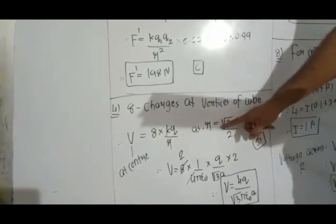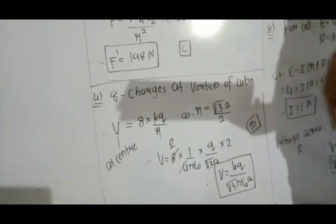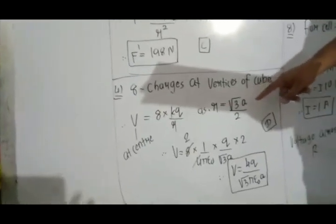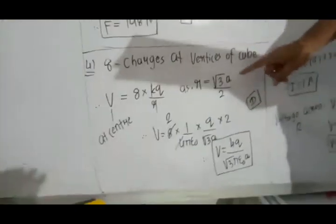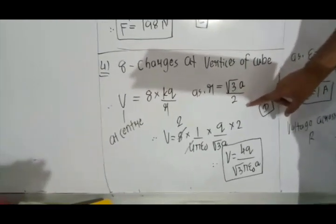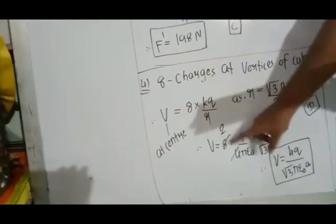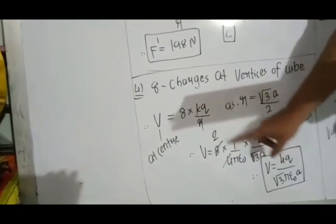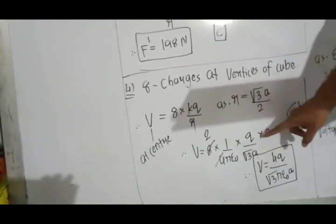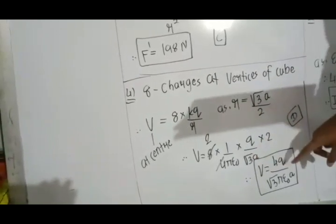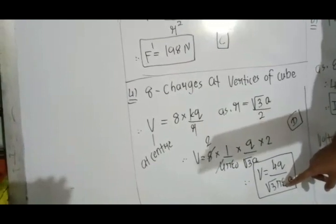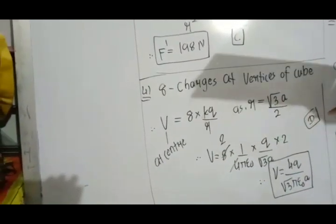The body diagonal of a cube of side A is √3·A. The distance from a vertex to the center is √3·A/2. So V = 8 × (1/4πε₀)·Q/(√3·A/2), which gives V = 4Q/(√3·π·ε₀·A). Option D.